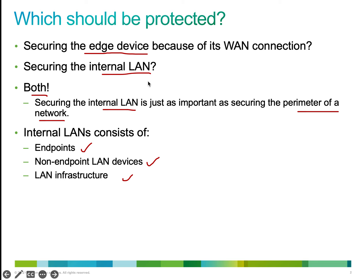If our local area networks are not secure, attackers can gain access to our switches and carry out denial of service attacks, reconnaissance attacks, and many other attacks. So we have to secure the internal local area network just as importantly as the perimeter devices, which include the routers and access points. The internal LAN consists of endpoints like switches, access points, routers, non-endpoints, and the LAN infrastructure.